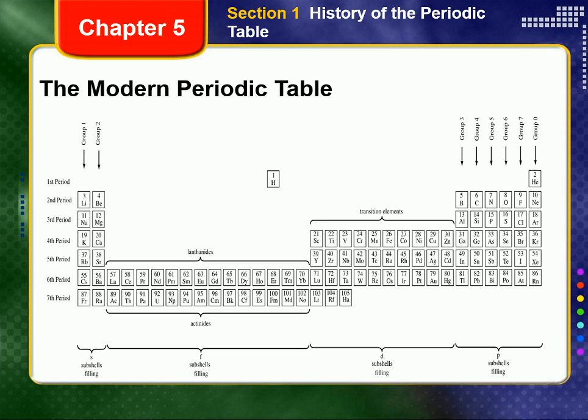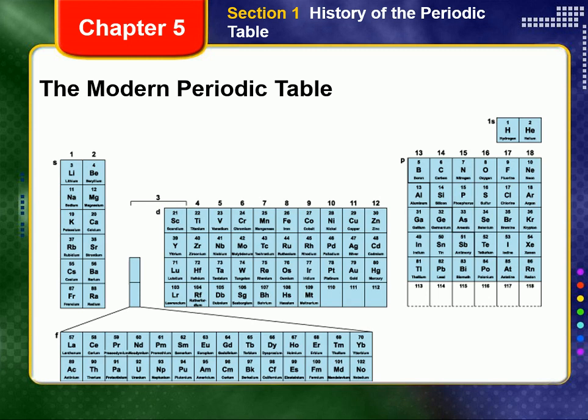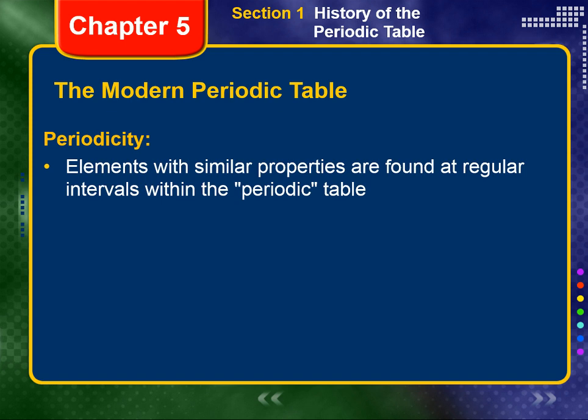The lanthanides and actinides belong in periods 6 and 7, respectively, of the normal periodic table, but between the elements of groups 3 and 4. To save space, however, the lanthanides and actinides are usually set off below the main portion of the periodic table, as is shown on your screen now.